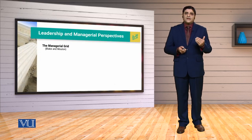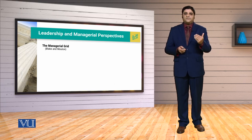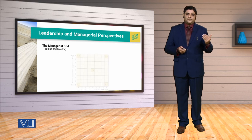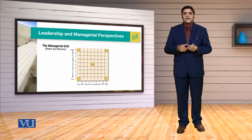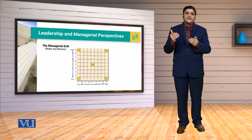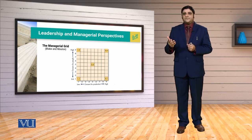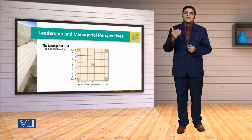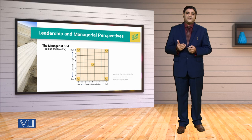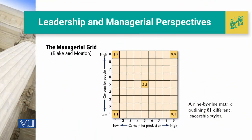At the same time, another concept comes in which is known as the managerial grid, given by Blake and Newton. They came up with the idea that when we study the leadership perspective, there are two main concerns: concern for people and concern for production. Based on these two concerns, we develop a grid consisting of 81 cells, which is actually a nine by nine matrix.